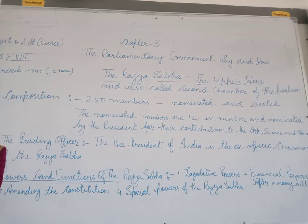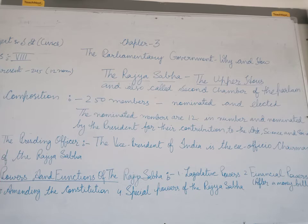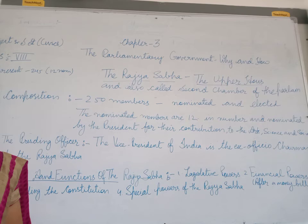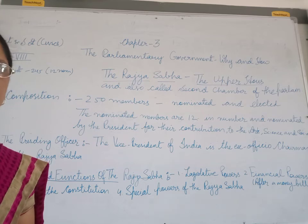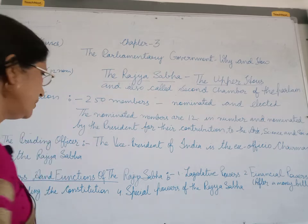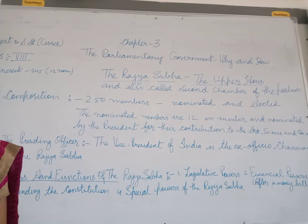Now we look at the powers of the Union Parliament — what powers does the Union Parliament have? The intention of the framers of the constitution was to make the Lok Sabha the dominant chamber. Its members are elected directly by the people, but we should not forget that no house is complete by itself. Both houses together are called the Parliament of India. Parliament is complete only with both Lok Sabha and Rajya Sabha together — the presence of both houses is very important.